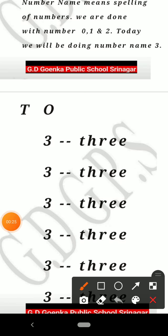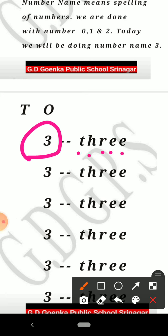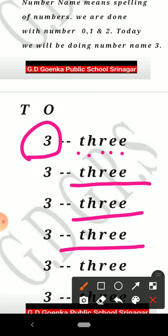Here we are having number 3, and the spelling of number 3 is THREE. THREE. THREE.